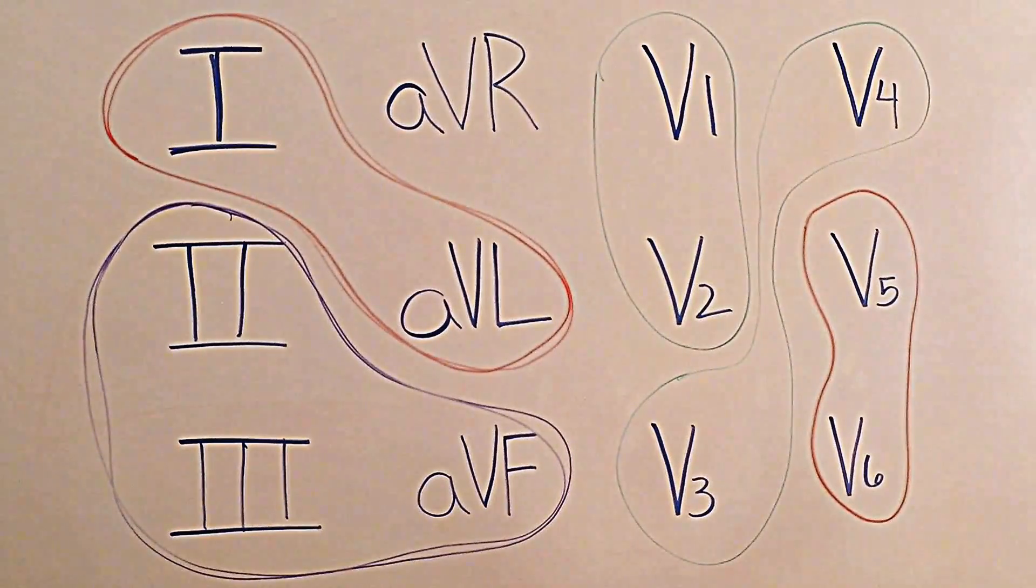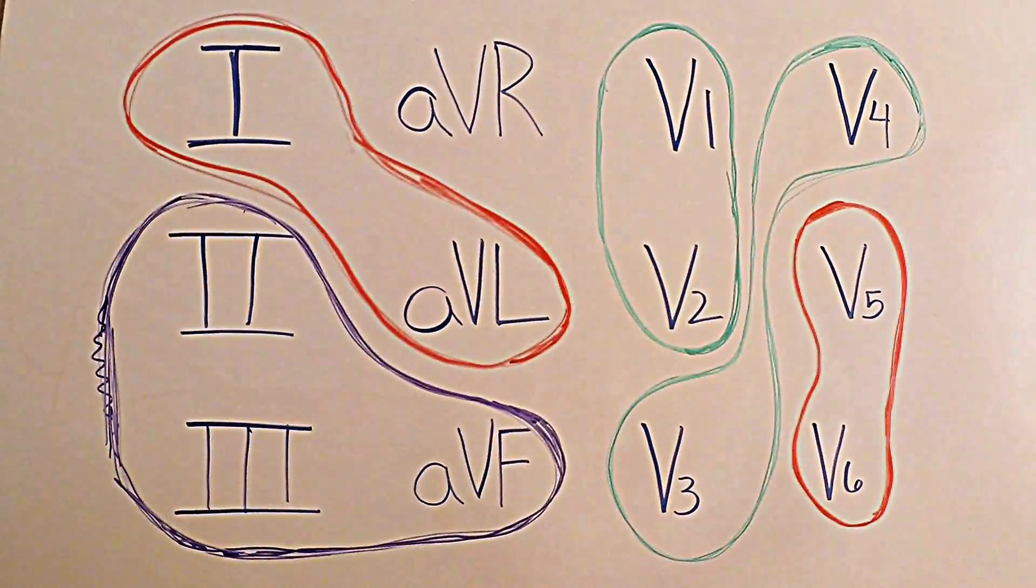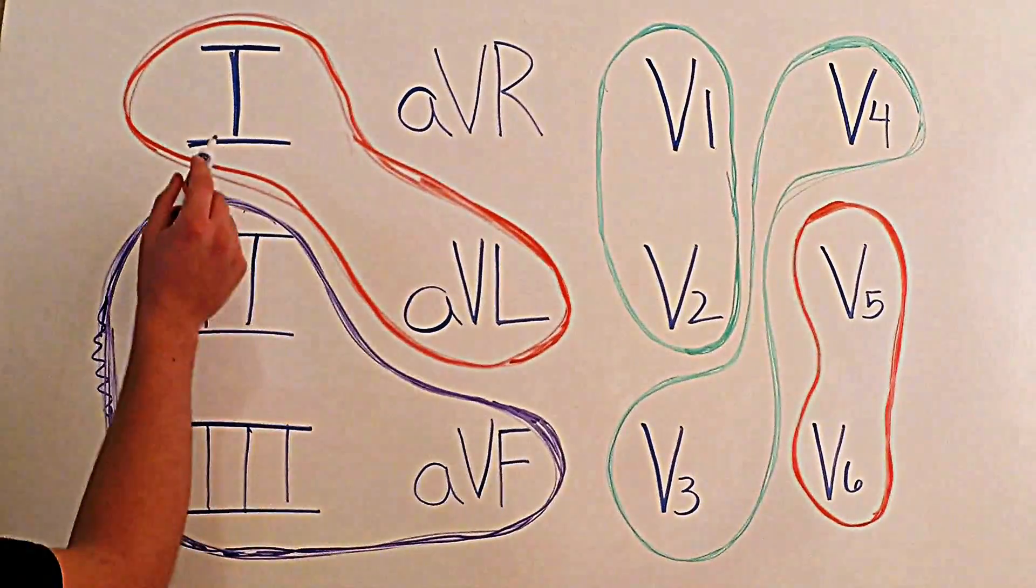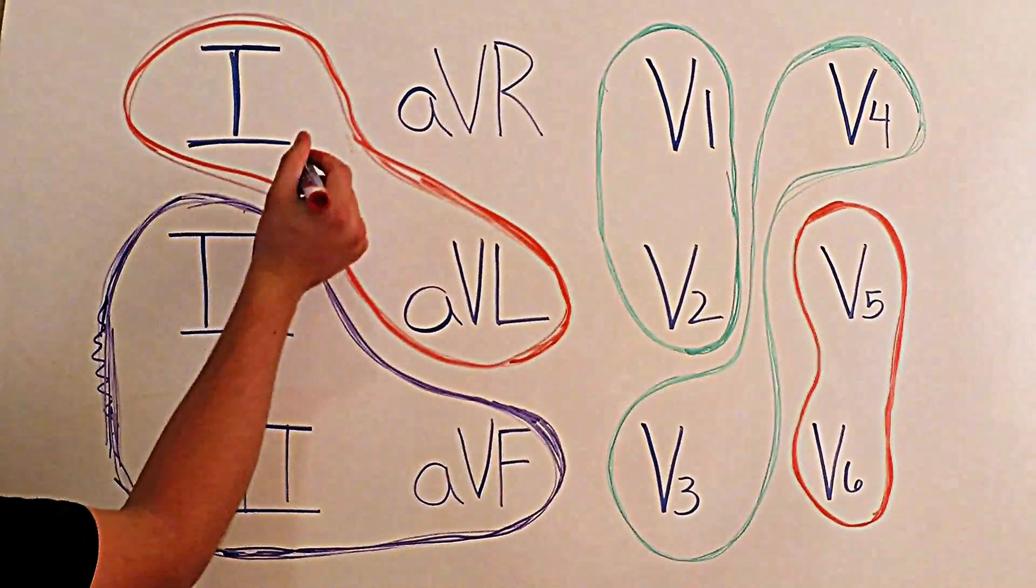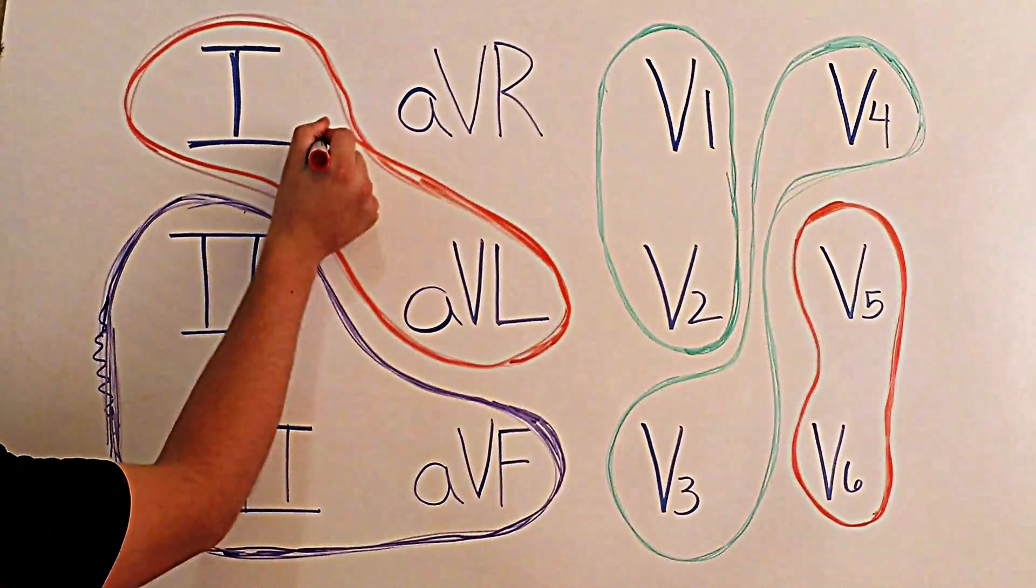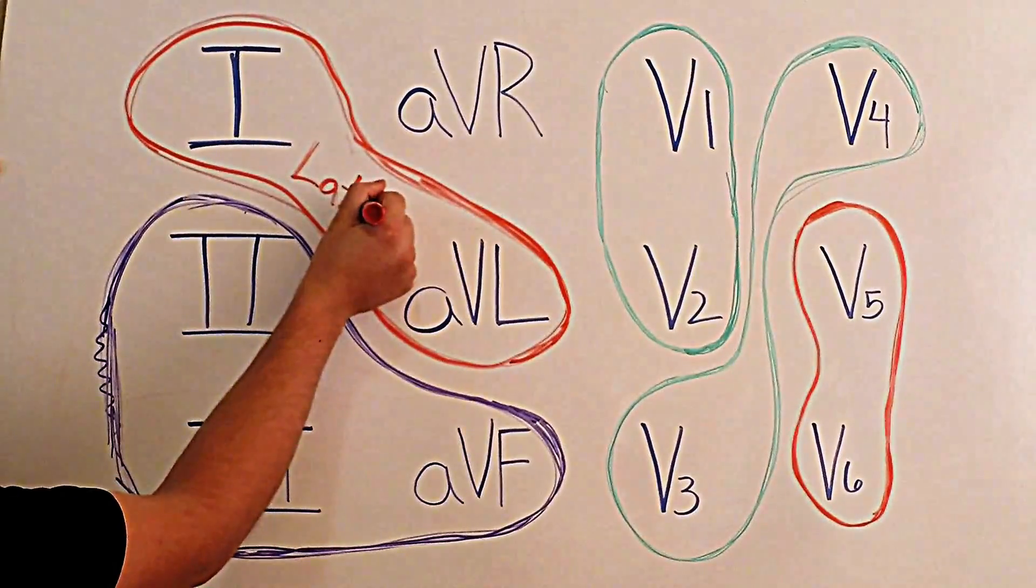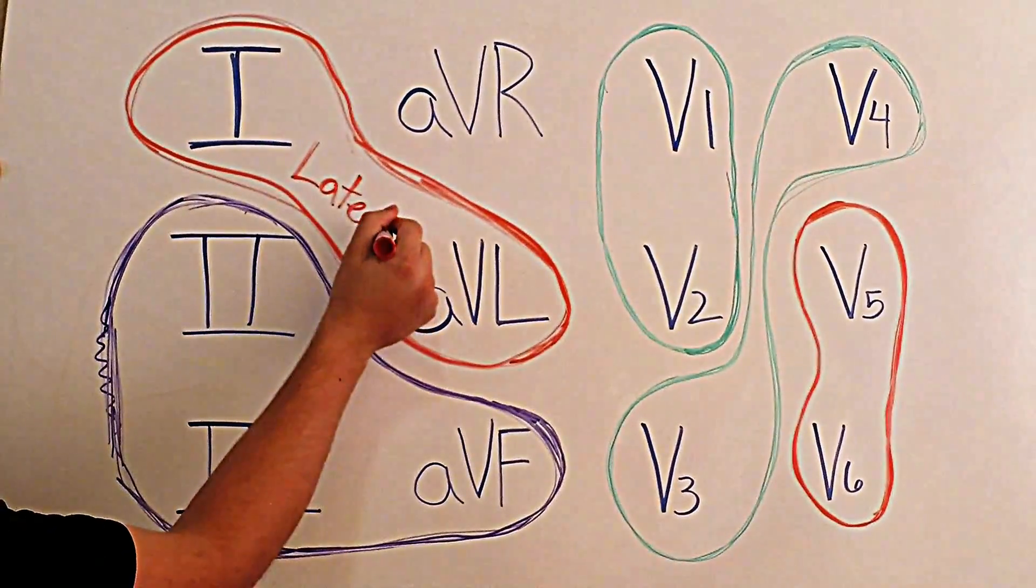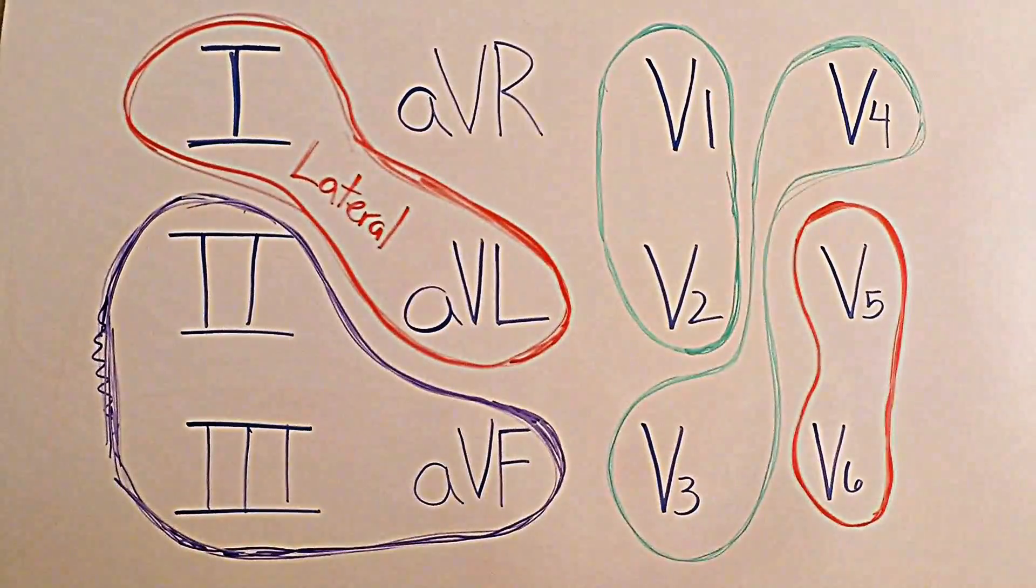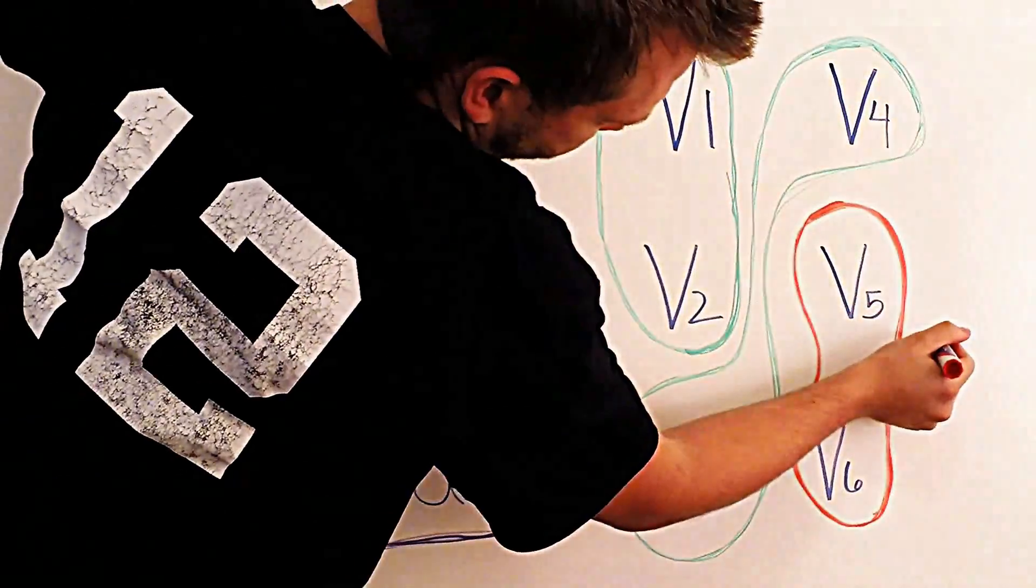So again, pause your video, do this as many times as it takes until you have this exact sequence memorized. It shouldn't take you very long using the leads you've already written down on step one. Okay guys, we're almost there. Step three, I went ahead and darkened my circle so that you guys can see a little bit better. All you have to do for this step is just label these circles. So go straight to I and aVL, you're going to label that lateral.